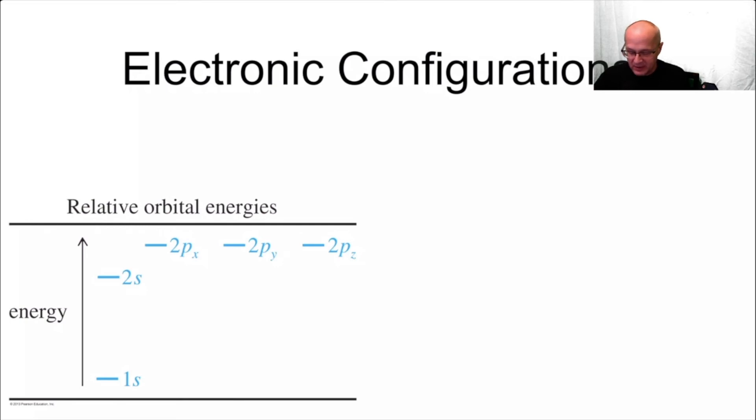Now, don't forget, these orbitals are in energy levels. They have particular energy levels. So the 1s orbital is the lowest energy orbital because it's the closest to the nucleus. The 2s is the second highest energy level orbital. Why? Because it's one shell away from the nucleus, one shell away from the positive charge.